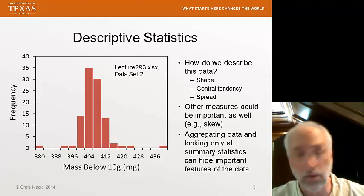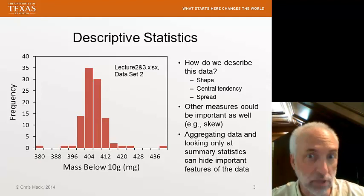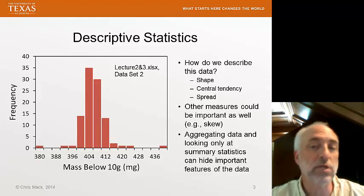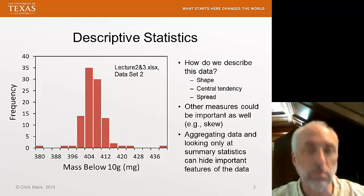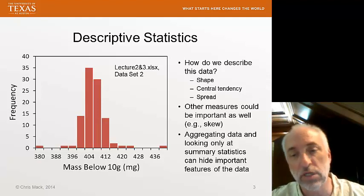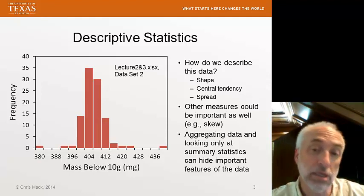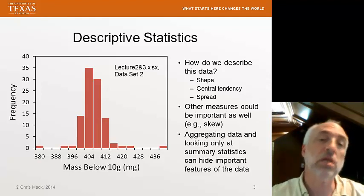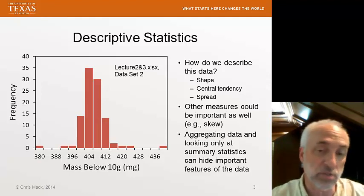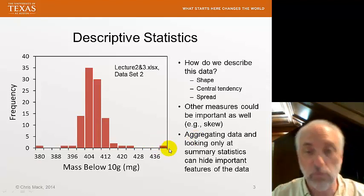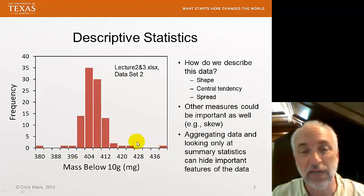However, there are other measures. There's lots of other measures actually. Most of the time these three will be sufficient. For example, we might want to know the skew, which is a measure of how asymmetric the distribution is. Now, when we aggregate data into only looking at a few summary statistics, there are some important points of the data that can be hidden. In particular, we might have some really interesting things going on in the tails of this distribution that might be hidden if we concentrate on the middle part.